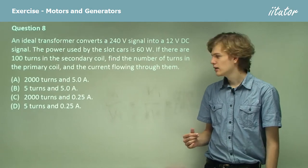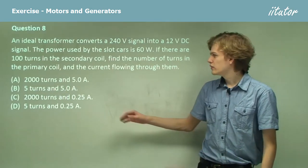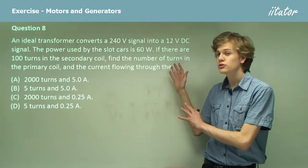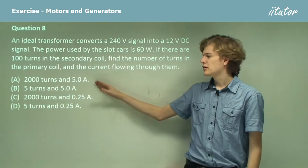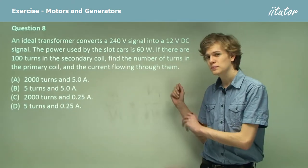So we can see from the options that either we're going to get the number of turns being larger or smaller in the same ratio as the voltages. And the current is going to be larger or smaller in the same ratio as the voltages.